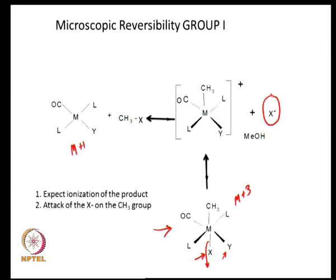X⁻ then makes an attack on CH₃ in an SN2 type of fashion, and if it does that, CH₃X will be formed and the original complex will be released. This is what is dictated by microscopic reversibility: you expect ionization of the product, and in the second step you expect attack of X on the CH₃ group.